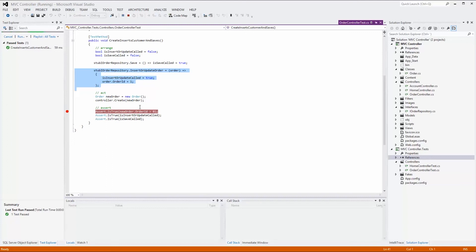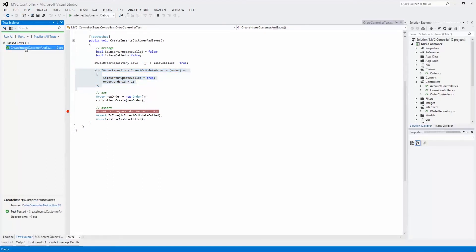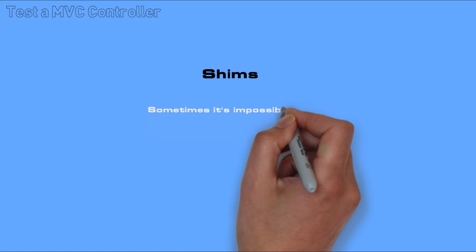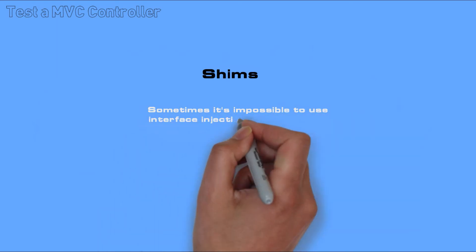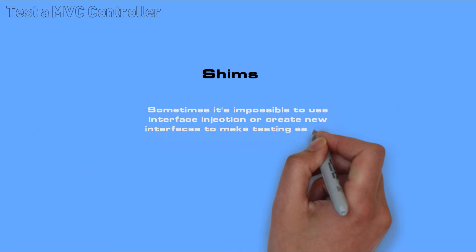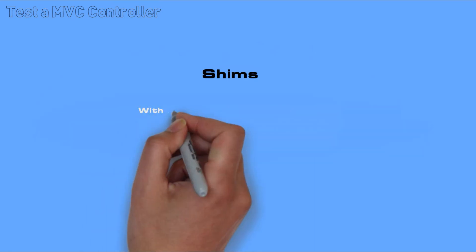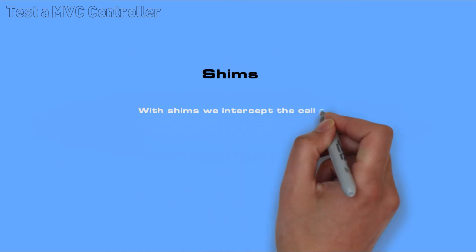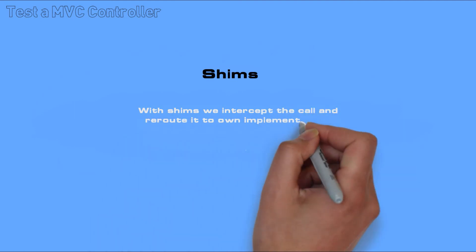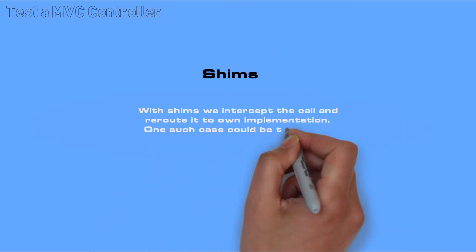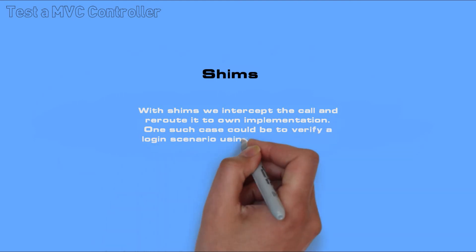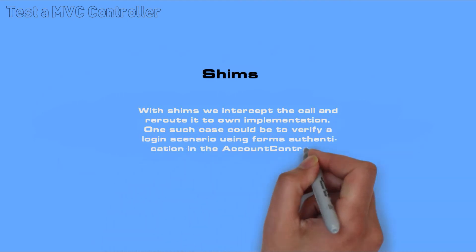If we run the test completely, you can see in the test explorer that it has passed. Sometimes it is impossible to use interface injection or create new interfaces to make testing easier. In these cases, SHIMS can be an option. With SHIMS, we intercept the call and reroute it to our own implementation.